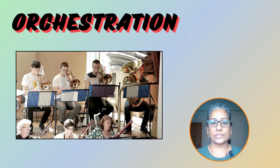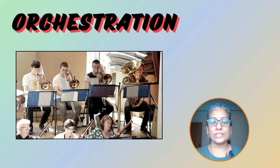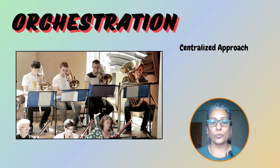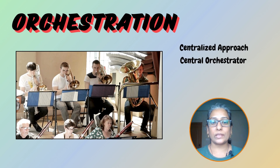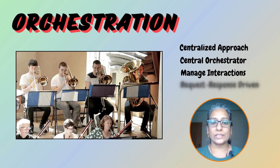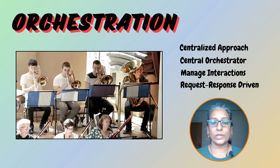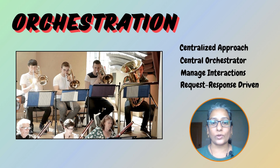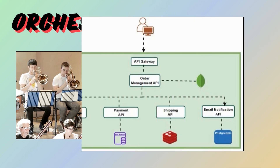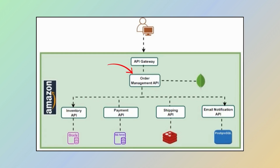Now let's talk about orchestration. Orchestration is a centralized approach where a central orchestrator manages all interactions — it tells each service what to do and when to do it, much like a conductor leading an orchestra. Amazon uses orchestration for order fulfillment. When we place an order, an orchestrator like an order management service coordinates everything: it checks inventory, processes payments, arranges shipping, and updates the order status.